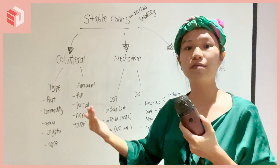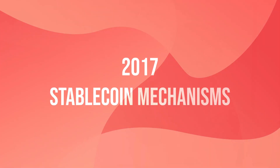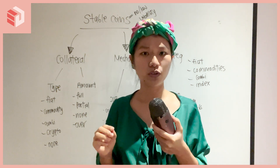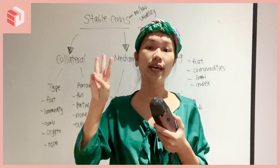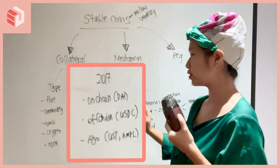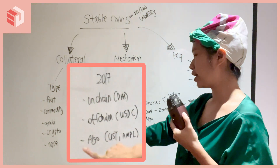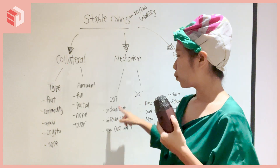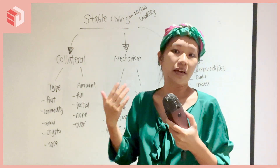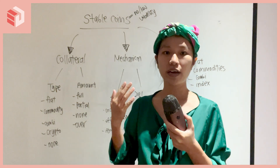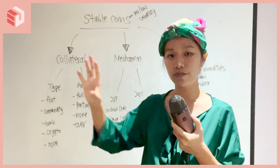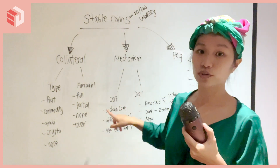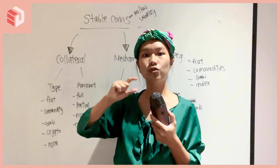To understand what we're talking about in 2021, let's take a step back to understand what 2017 was about. In 2017, there was a very brilliant report that classified stablecoins into three categories. The first is on-chain stablecoins — coins like DAI from MakerDAO — where you take on-chain assets like ETH, USDC, YFI, or AVAX, and use them as collateral to mint DAI. So you take on-chain assets, use them as collateral to mint your stablecoin.